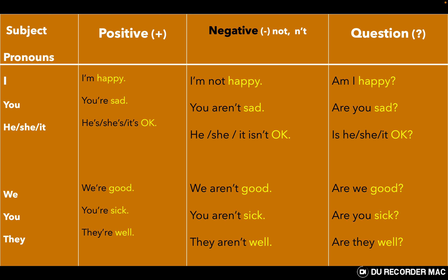You aren't sick, they aren't well. To make a question, we put the verb 'to be' first and the subject pronoun second: Am I happy? Are you sad? Is he okay? Is she okay? Is it okay? Are we good? Are you good?